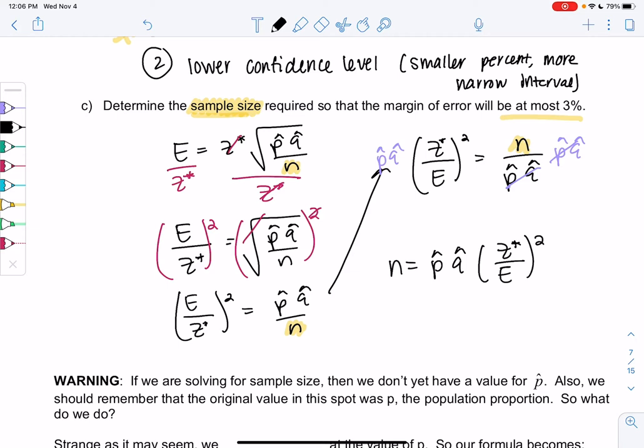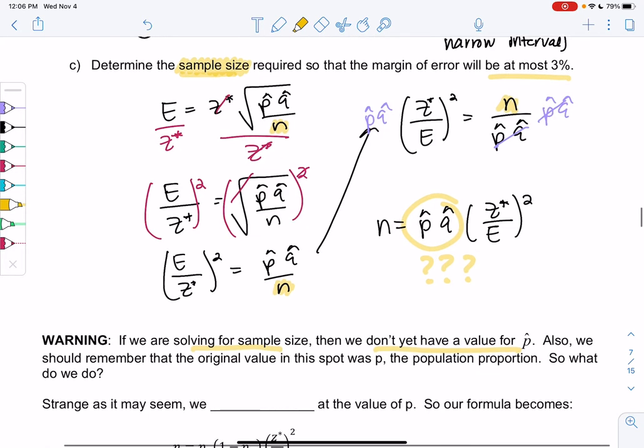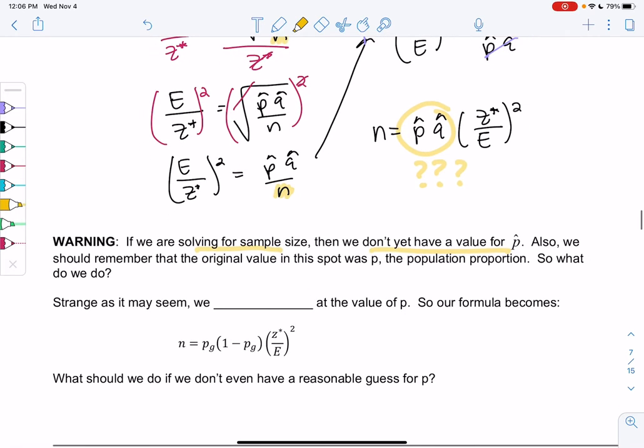The problem is, if we're solving for sample size, why would we possibly have a sample? This is something we want to do before we have a sample. If we're solving for sample size, then we probably don't have a p-hat. Also, the original value in this spot was P, the population proportion, which we also don't know. We're starting from scratch. We don't know anything about the proportion. So what we're going to do, as weird as this is, is we are going to guess the value of P. Instead of using P, we'll use P-guess. Instead of using Q, we'll use 1 minus P-guess, which is Q-guess, then times Z over E all squared. Let's box this formula.